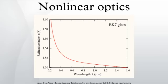Optical parametric oscillation — generation of a signal and idler wave using a parametric amplifier in a resonator. Optical parametric generation — like parametric oscillation but without a resonator, using a very high gain instead. Spontaneous parametric down conversion — the amplification of the vacuum fluctuations in the low gain regime. Optical rectification — generation of quasi-static electric fields. Non-linear light-matter interaction with free electrons and plasmas.